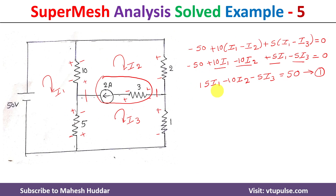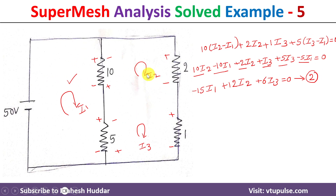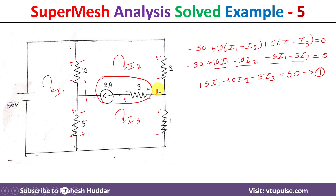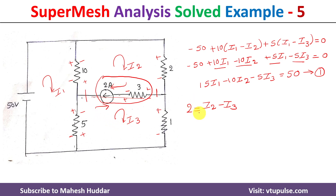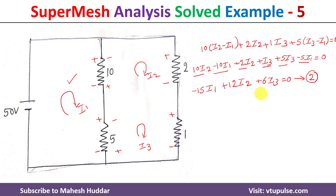We already have equation one for the first loop and equation two for the super mesh loop. Now we need to find the equation for the super mesh branch. For this branch, 2 amperes is flowing. The direction of the 2-ampere current and I2 are the same, but I3 is flowing in the opposite direction. So we get: 2 equals I2 minus I3. Make this equation number three.